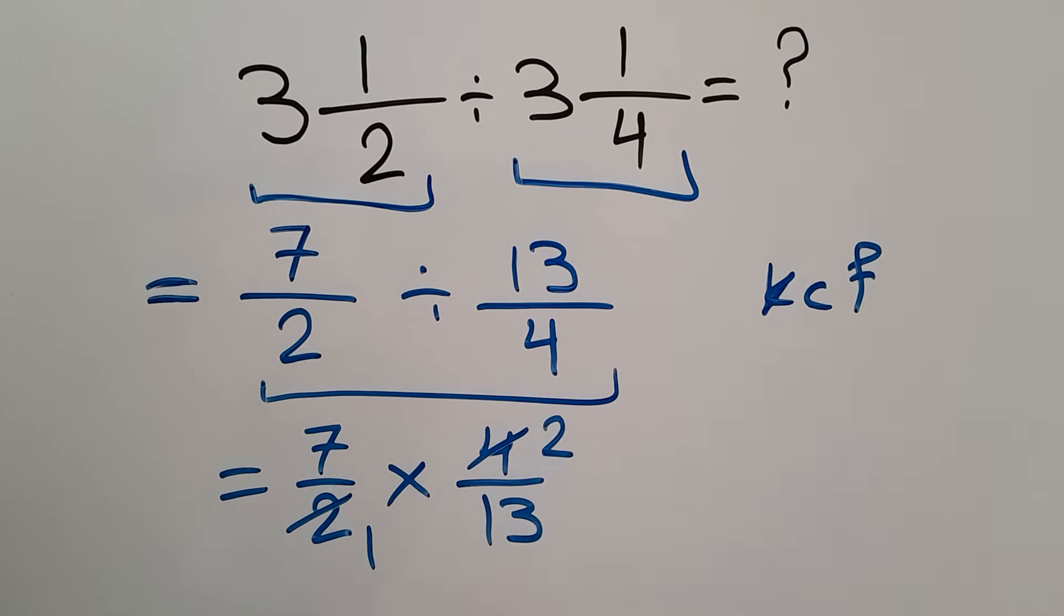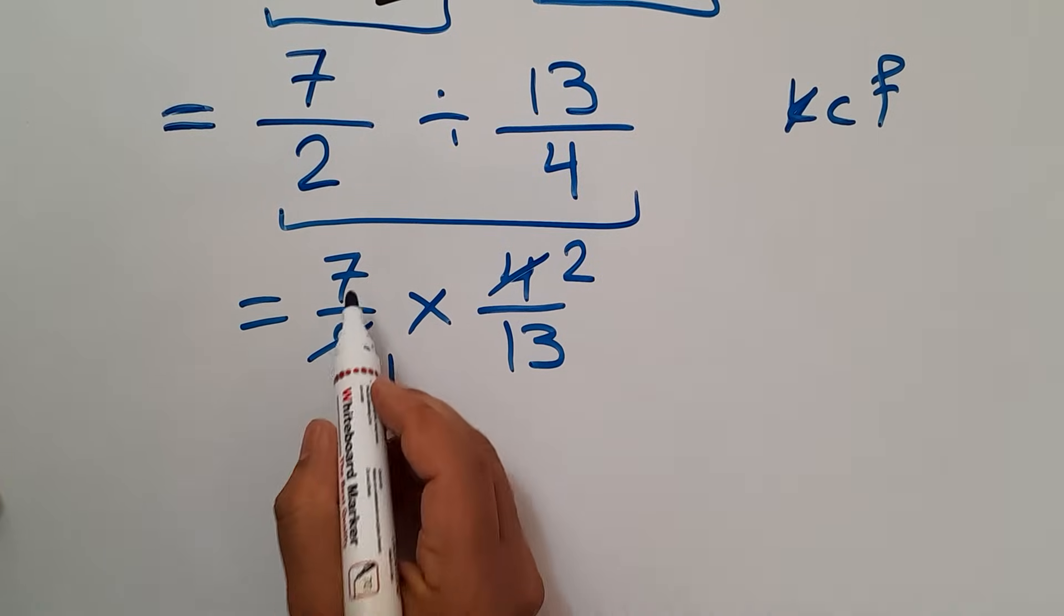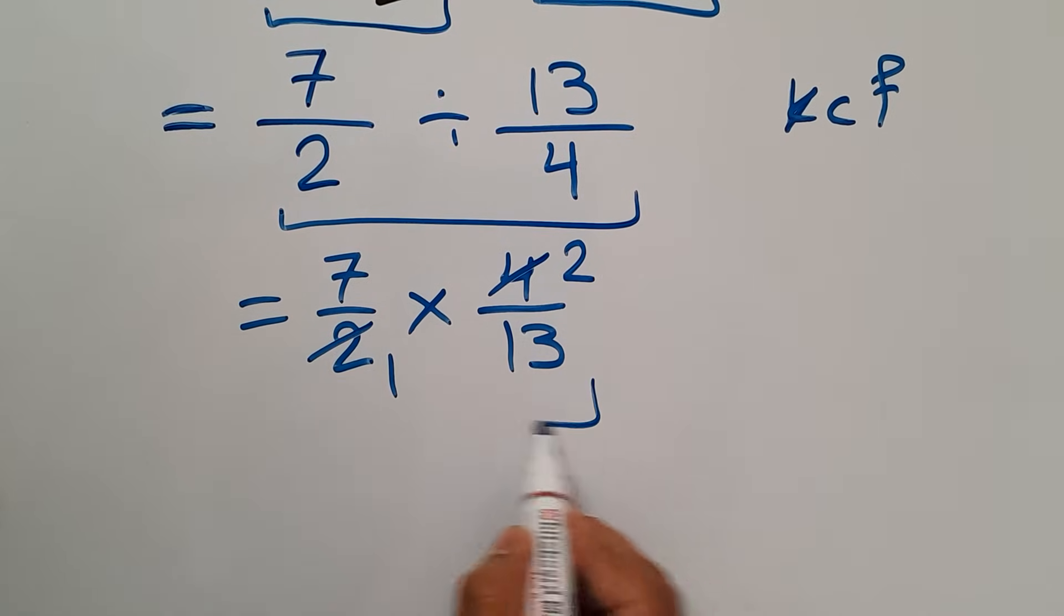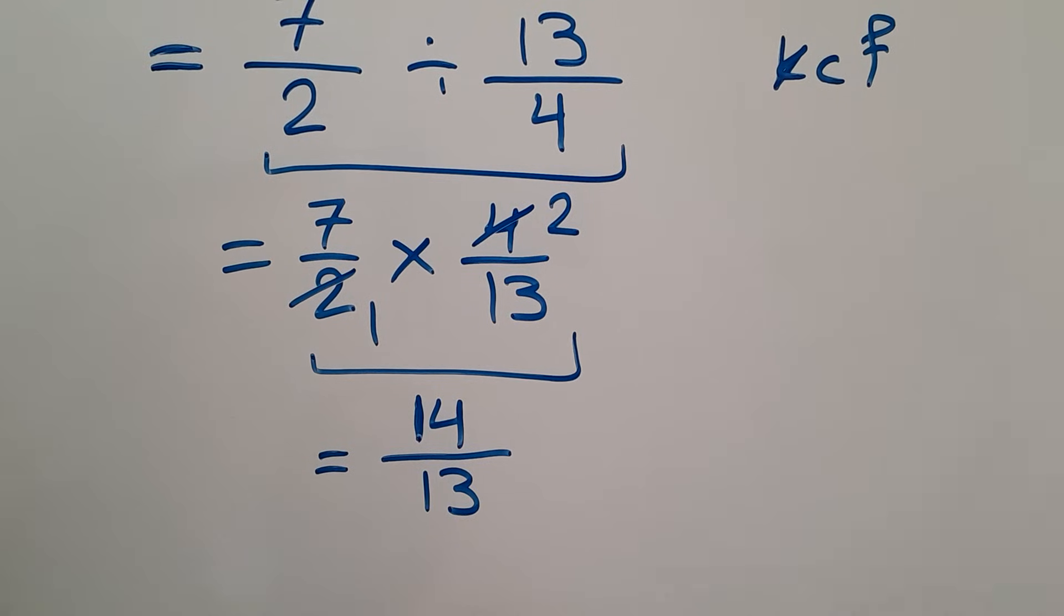Now let's convert this improper fraction to a mixed number. 14 is 13 plus 1, so we can write 13 plus 1 over 13. 13 divided by 13 gives us 1, so 1 and 1 over 13.